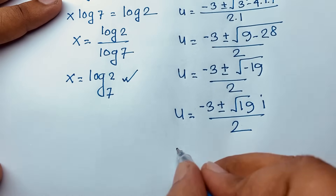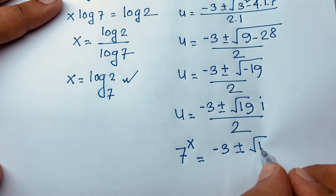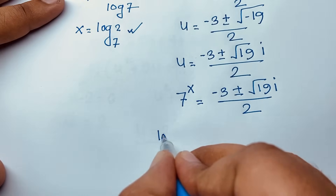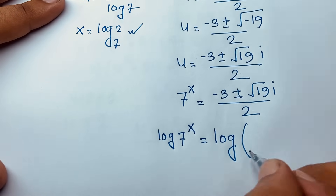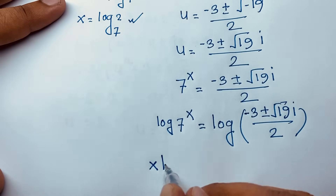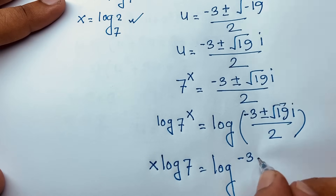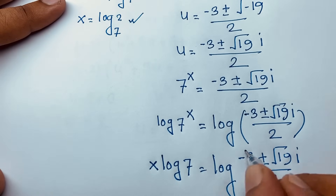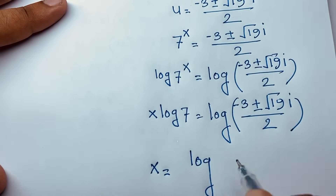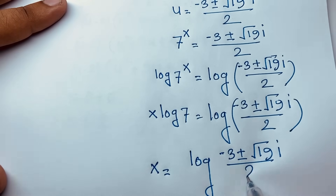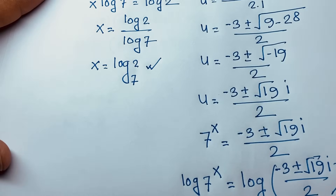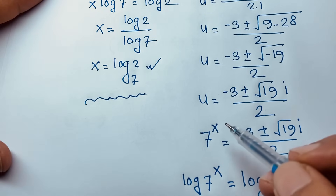Since u equals 7^x, we have 7^x = (-3 ± √19 i) / 2. Taking log of both sides: x log 7 = log((-3 ± √19 i) / 2), so x = log base 7 of ((-3 ± √19 i) / 2). This is a complex solution, not a real solution. Our real solution is x equals log base 7 of 2. This is our final answer.